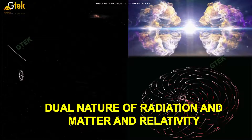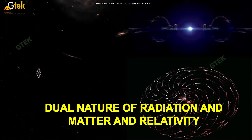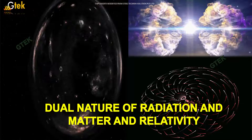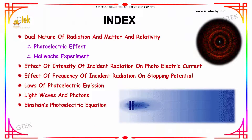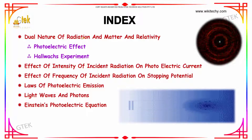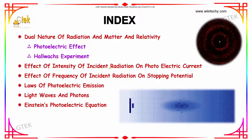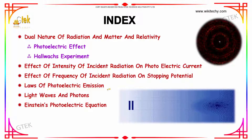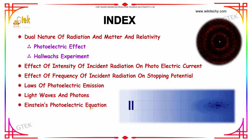This topic covers the dual nature of radiation and matter, and relativity. The index includes the dual nature of radiation, followed by the photoelectric effect and the Halvash experiment. We will discuss the effect of intensity of incident radiation on photoelectric current and on stopping potential. Then the laws of photoelectric emission, light waves and photons, and finally Einstein's photoelectric equation.